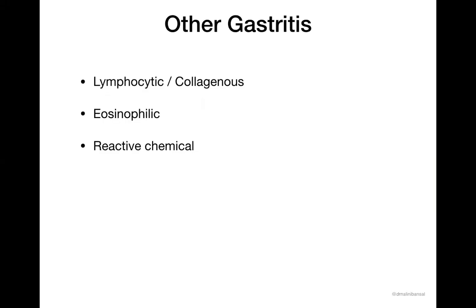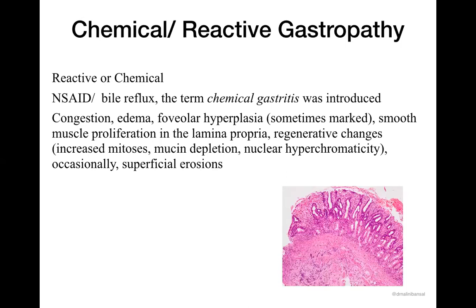Moving on to other kinds of gastritis usually seen in the stomach: lymphocytic or collagenous gastritis, eosinophilic gastritis, and reactive or chemical gastritis. Reactive or chemical gastritis is usually seen secondary to NSAIDs or other drugs. In reactive gastritis the epithelium undergoes regenerative changes — there will be ulceration, edema, congestion in the lamina propria, fibromuscular tissue proliferation, and increased foveolar cell hyperplasia. The image shows ulceration, congestion, and ectatic vessels in the superficial lamina propria — all occurring secondary to drug insult, usually NSAID-related — along with fibromuscular tissue expansion in the lamina propria.